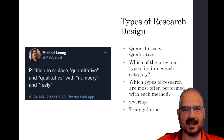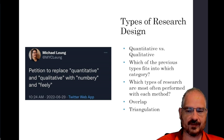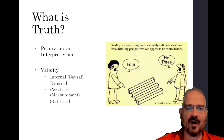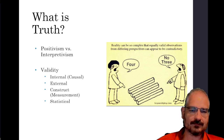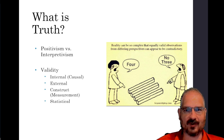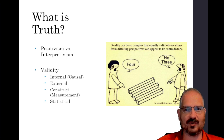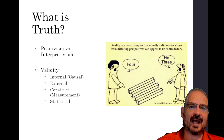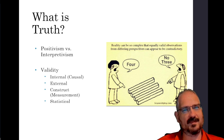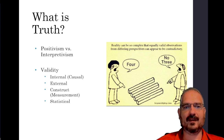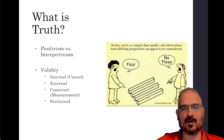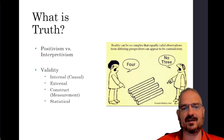The more methods you can use, the more variables, the more different measures for each variable — all that stuff — the better. You want to use more of these, not fewer, if you have the time and money and energy. We're trying to find truth, trying to find reality. If you go into a philosophy course, you'll find it's not really that easy to determine what truth with a capital T is. There are two different schools of thought — positivism and interpretivism — that try to answer the question: what is truth?